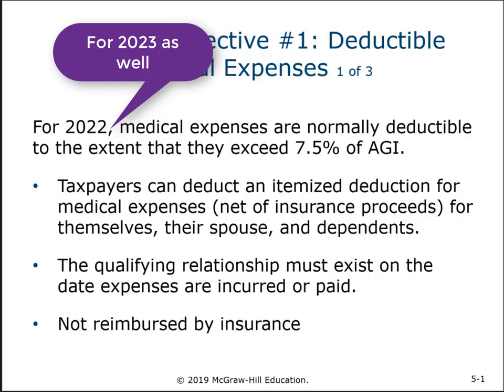Each one of these that we're going to talk about — we'll roughly go in the order that they show up on Schedule A — each one has some limitations. So it's not just a blanket, these are deductible, add it all up. There are restrictions and limitations, phase-outs, floors, all kinds of things that have to be considered to get how much is deductible, and then we add it all up for the different types of itemized deductions to see if we've gotten more than the standard.